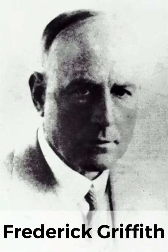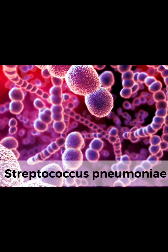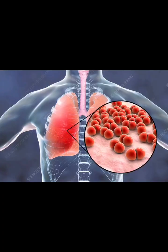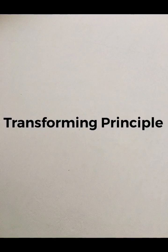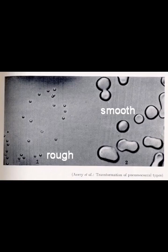In 1928, Frederick Griffith was working on Streptococcus pneumoniae that causes the disease pneumonia. He established the transforming principle by performing experiments on the two strains of Streptococcus pneumoniae.